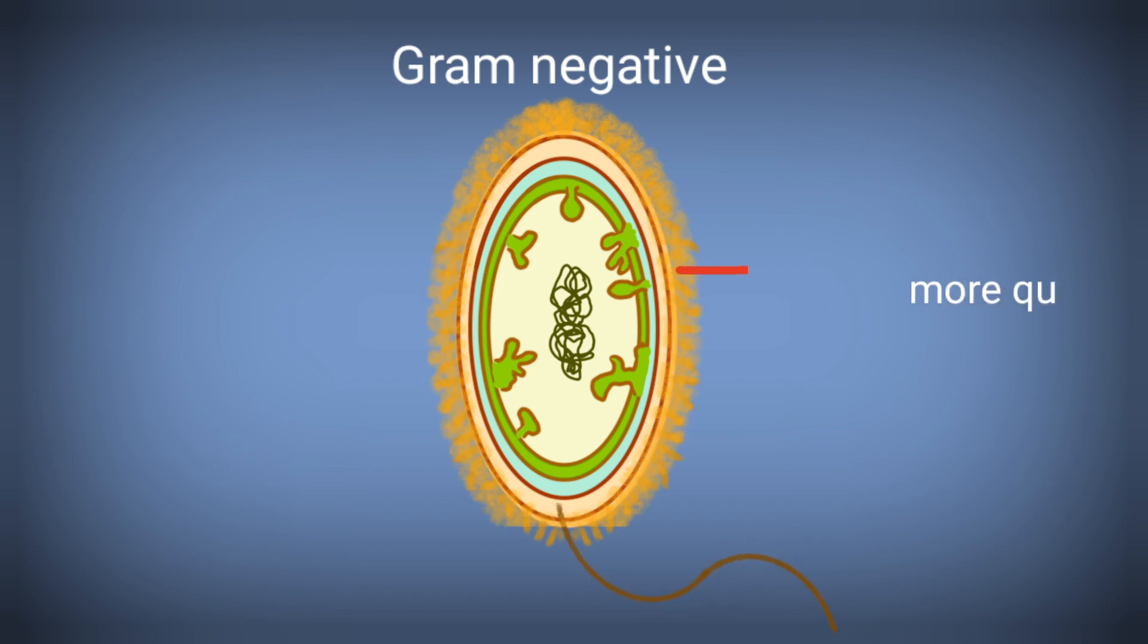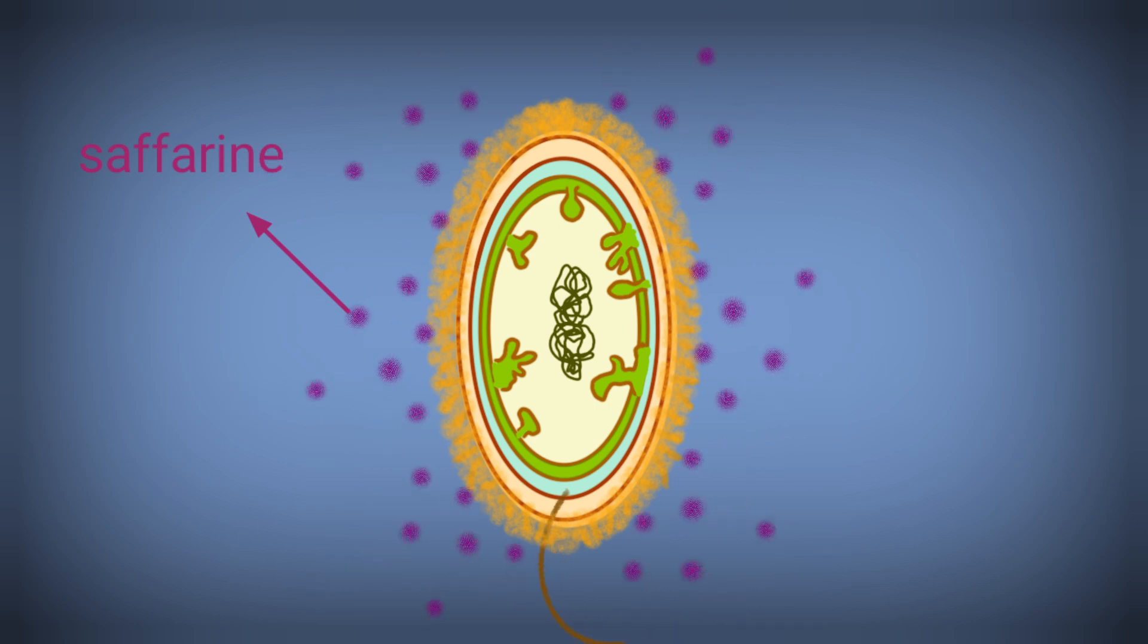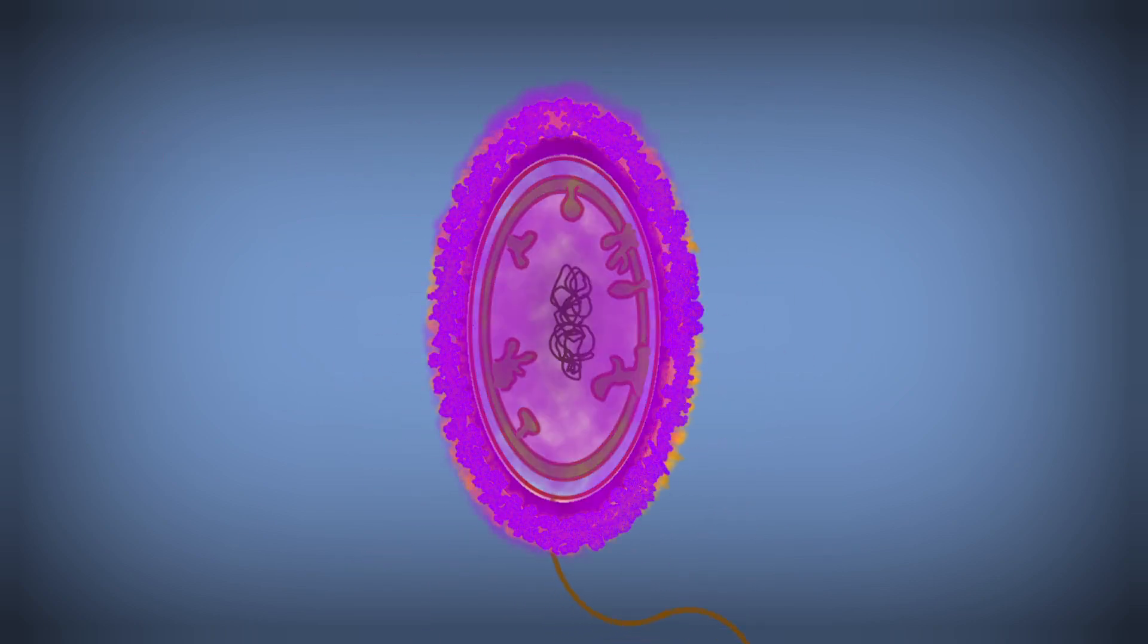But in case of Gram-negative bacteria, they contain thick layer of lipopolysaccharide. But Safranine crosses this layer, and that's why they appear pink.